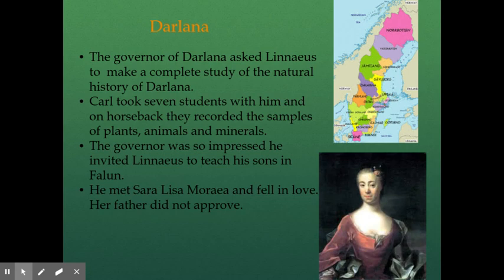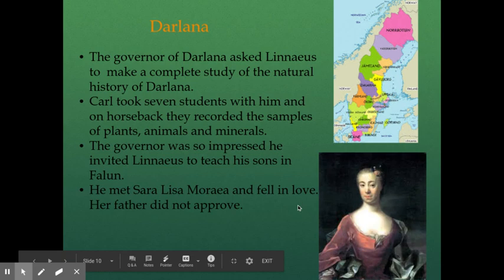He did so well on this journey to Lapland and the catalog he made that the governor of Dalarna heard about it and asked Linnaeus to make a complete study of the natural history of Dalarna. Carl said yes and took seven students with him and on horseback — which is extremely impressive — they recorded samples of plants, animals, and minerals. The governor was so impressed that he invited Linnaeus to teach his sons in a nearby area. While doing so, he met a woman named Sara Lisa Moraea and fell in love. However, it was a forbidden love of sorts because her father did not approve.